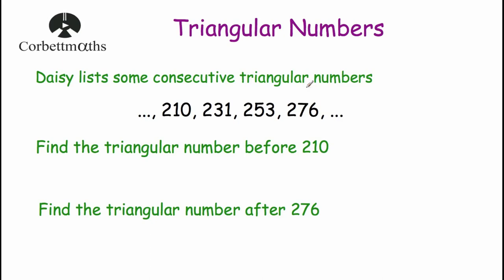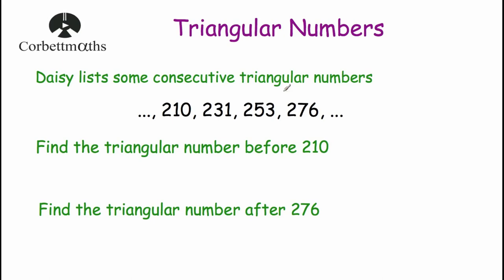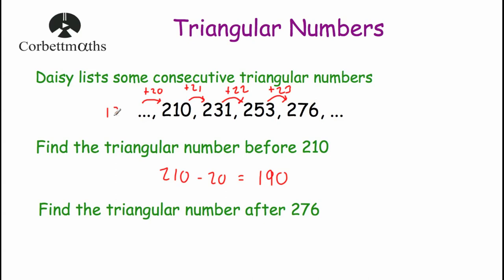Our next question says: Daisy lists some consecutive triangular numbers - consecutive means one after another. So we've got two hundred and ten, two hundred and thirty-one, two hundred and fifty-three, two hundred and seventy-six, and so on. We've been asked to find the triangular number before two hundred and ten. To get from two hundred and ten to two hundred and thirty-one, Daisy has added twenty-one; then she added twenty-two to get the next, and twenty-three for the one after. So the number before two hundred and ten would need twenty added to it to reach two hundred and ten, meaning we do two hundred and ten take away twenty, which gives us one hundred and ninety.